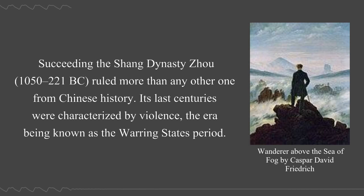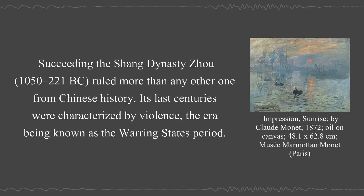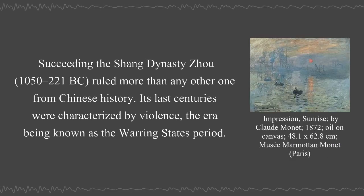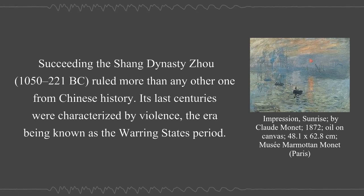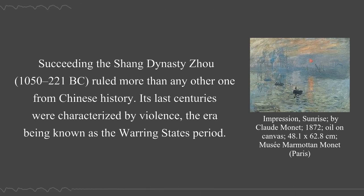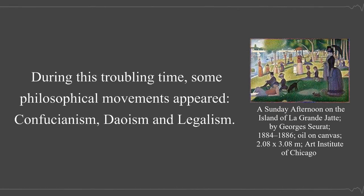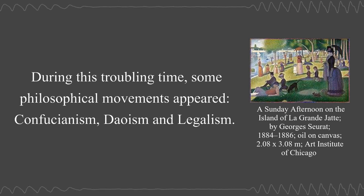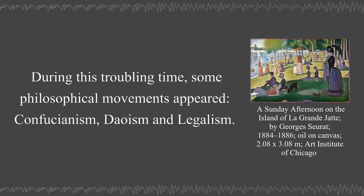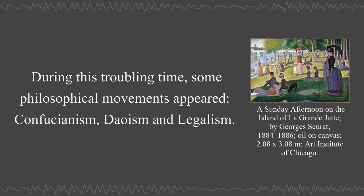Succeeding the Shang dynasty, Zhou, 1050–221 BC, ruled longer than any other dynasty in Chinese history. Its last centuries were characterized by violence, the era being known as the Warring States period. During this troubling time, some philosophical movements appeared: Confucianism, Taoism, and Legalism.